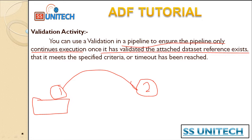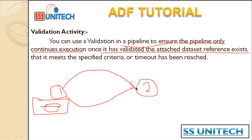Without fixing the time of execution, we can use the Validation Activity. It will check whether the source file is available or not. If the source file is available, it will load the data into the destination. If the source file is not there, it will wait for the specified time, then check again. If the dataset is there, it will continue to load into the table; if not, it will wait and check again.